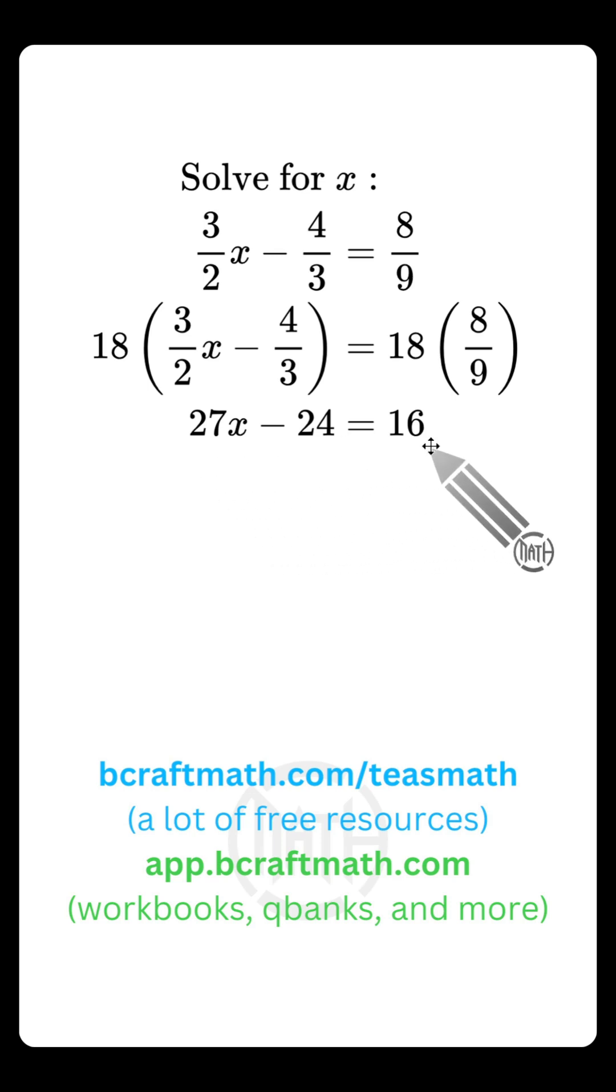And look at this nice equation we have now. We have two steps left. And that first step is to add 24 to both sides so that we can cancel them out over here. Bring down that 27x. 16 plus 24 is 40.